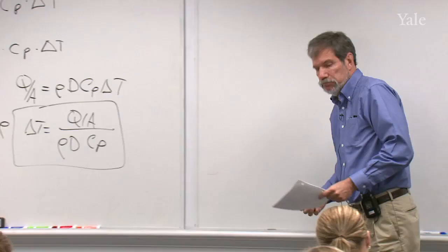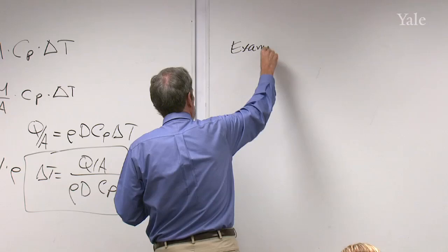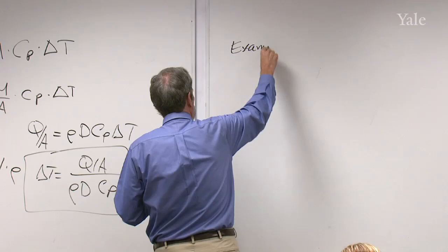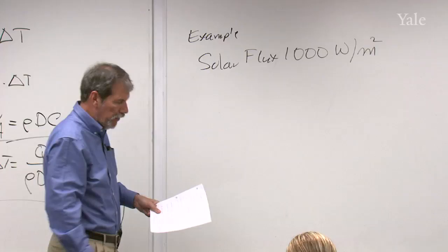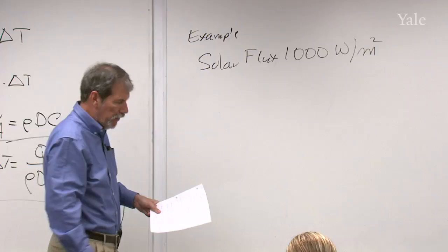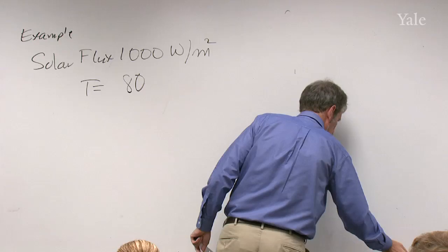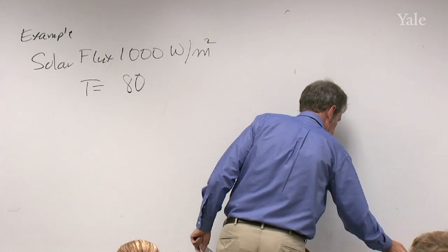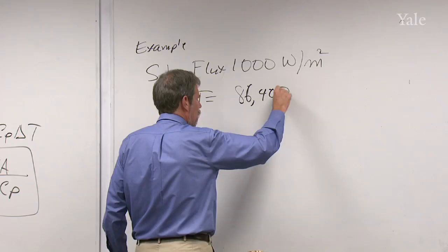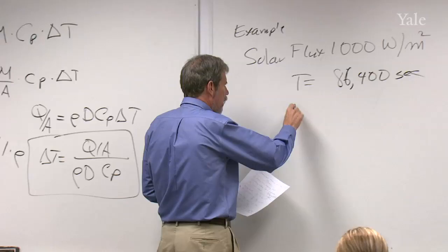So a quick example of that, I'm going to take a solar flux of 1,000 watts per square meter. Let's say we have sunlight hitting the surface of the ocean with that kind of intensity. And that persists for one day, which is 86,400 seconds. So let's say that persists for one day, and that heat is distributed over a depth of 100 meters.